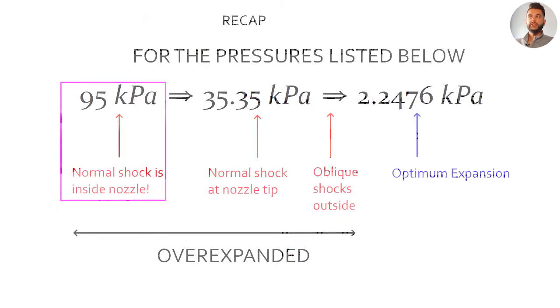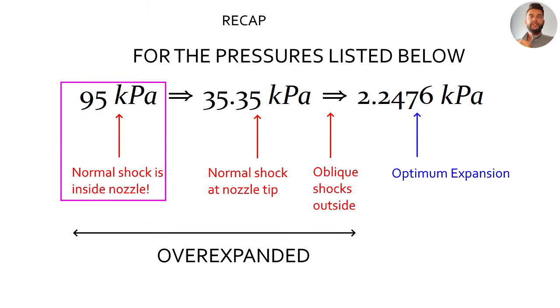95 kilopascals is what we are looking for. 2.2476 kilopascals gives you optimum expansion. As we raise the back pressure we get oblique shocks inside. As we raise it even more to 35 kilopascals we get normal shocks at the tip and then we have normal shocks inside. So the nozzle is operating in the over expanded case.